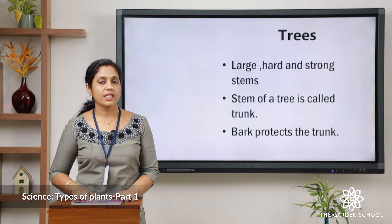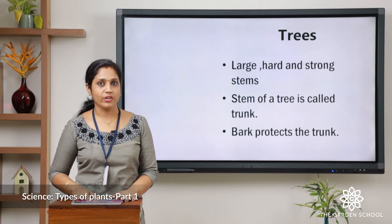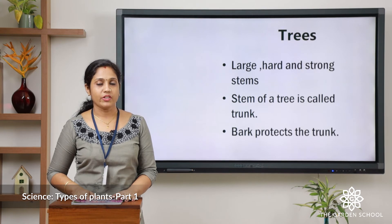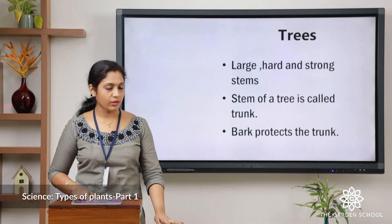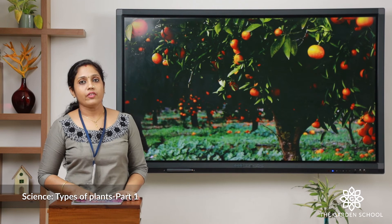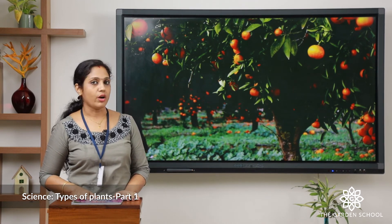There are coconut trees, mango trees, jackfruit trees, and many more. Many fruits grow on trees, but there are also trees where fruits don't grow, like the banyan tree and rubber tree. Apple tree, orange tree, coconut tree — these are all fruit-bearing trees. In this picture you can see an orange tree.